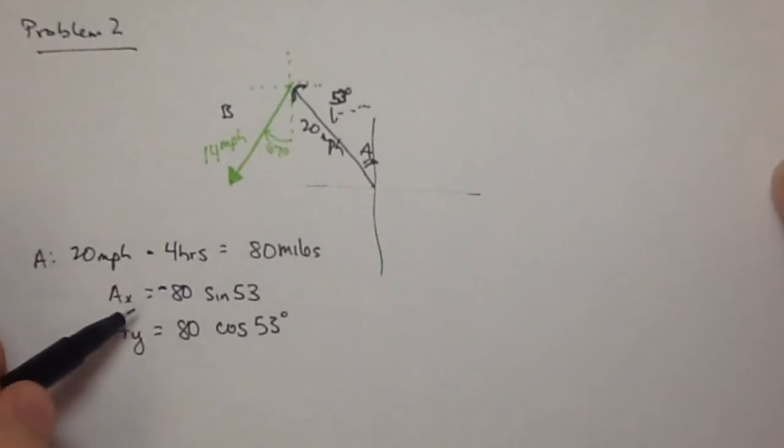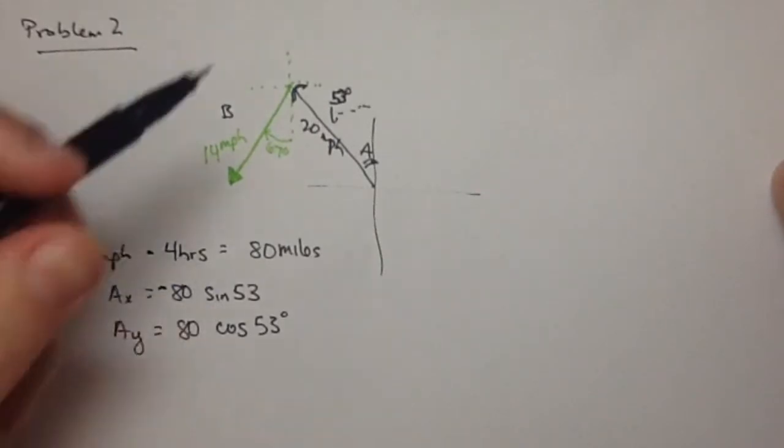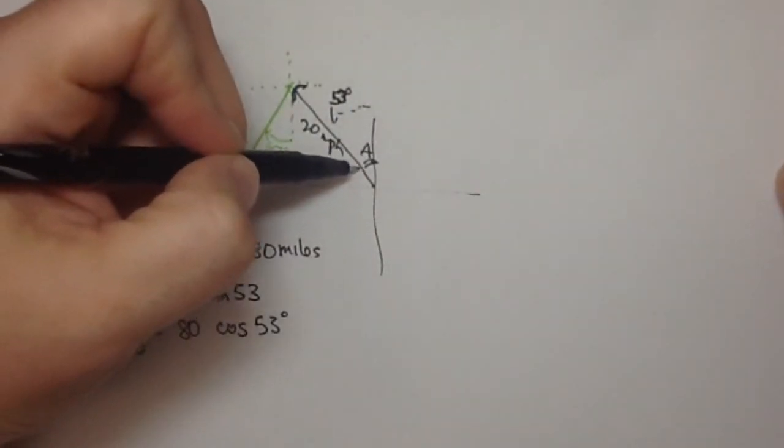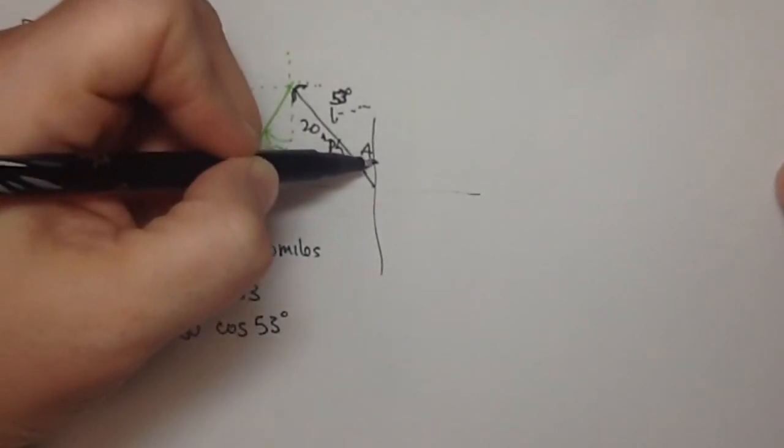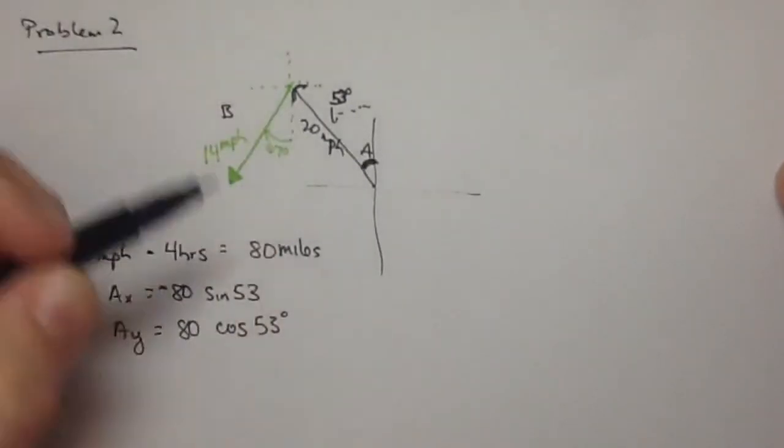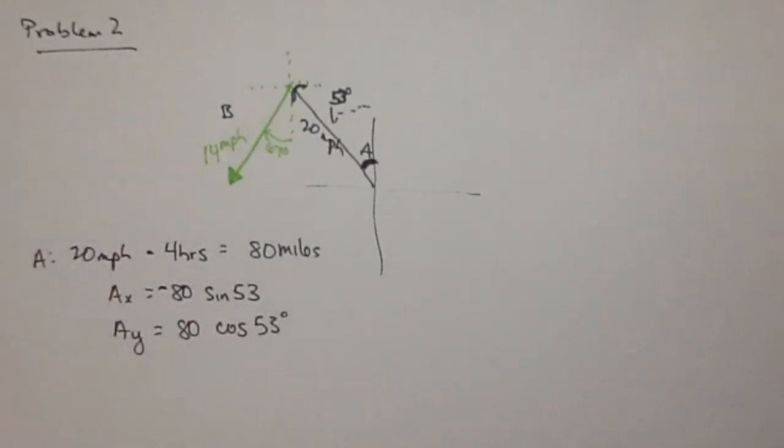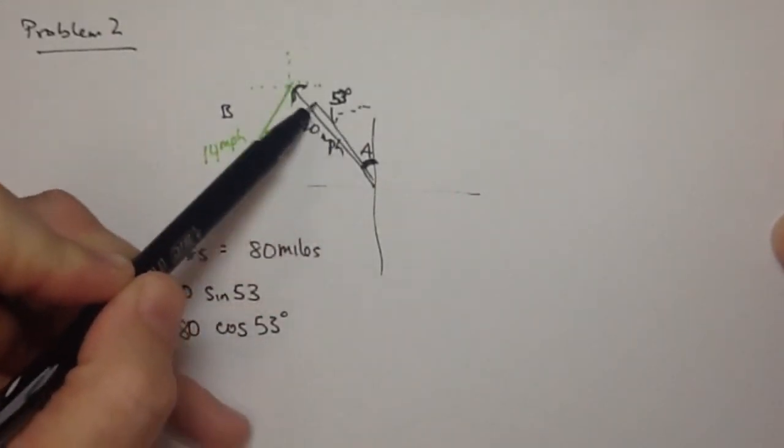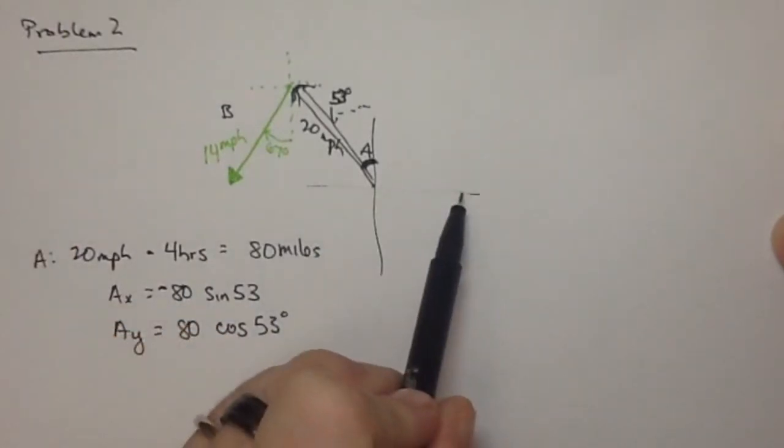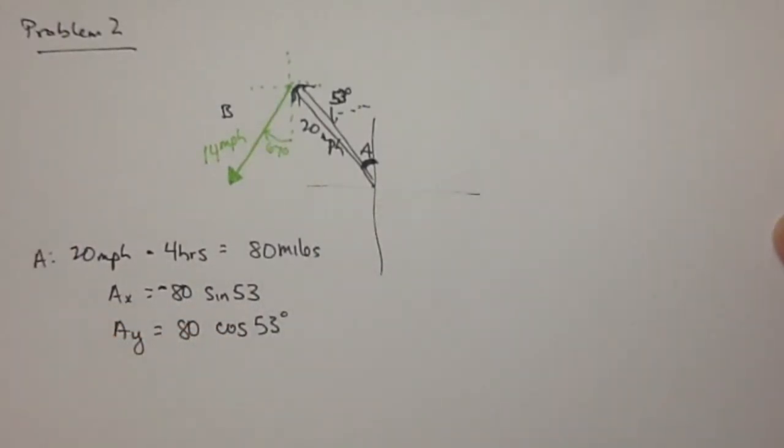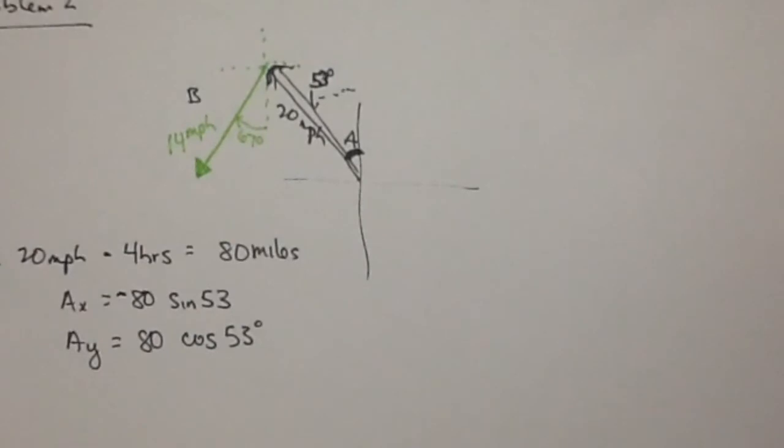And you might be scratching your head, wait, I thought X was always cosine. Well, that's if you're using this angle, right? The angle between your vector and the X axis. Since we're using this angle, these switch. So guys, always just draw your triangle and don't rely on the formula being X is always cosine. X is always the left or right bit, and you can figure that out using sine or cosine.